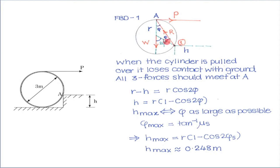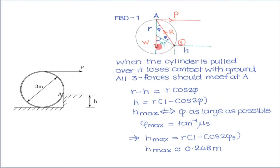Suppose this angle is phi. Then this is an isosceles triangle: this angle should also be phi and the outside angle is 2 phi. For some given height h, this distance is r minus h, and r minus h equals r cos 2φ. We can rewrite this as h equals r times (1 minus cos 2φ) — simple geometry.